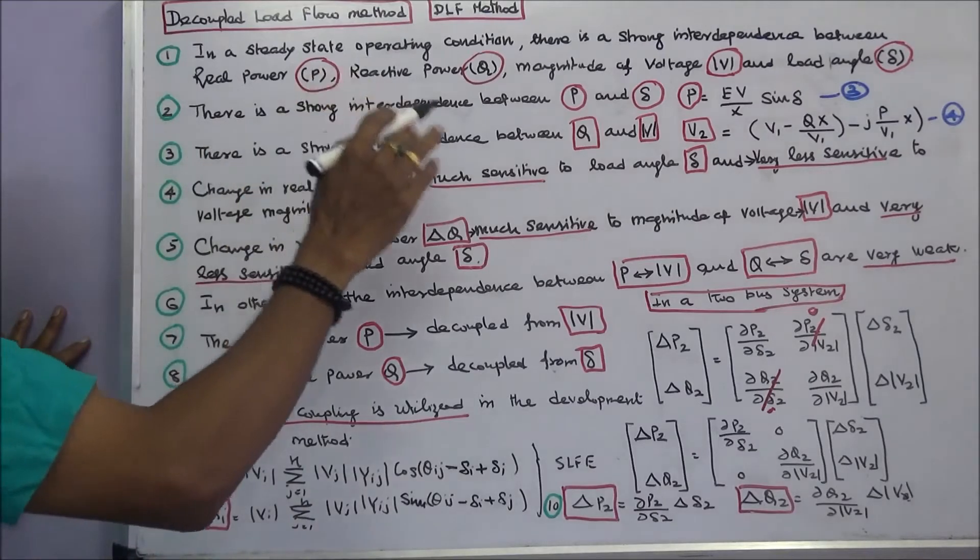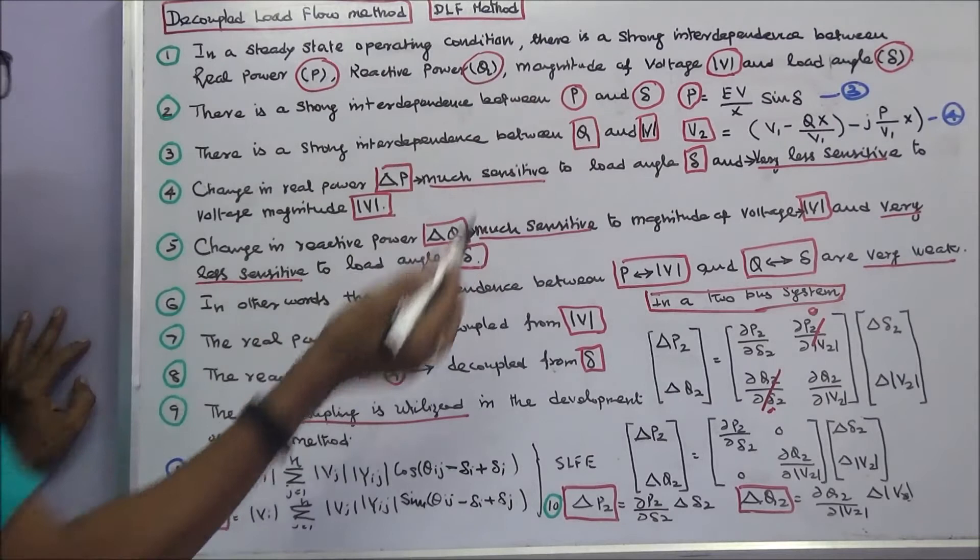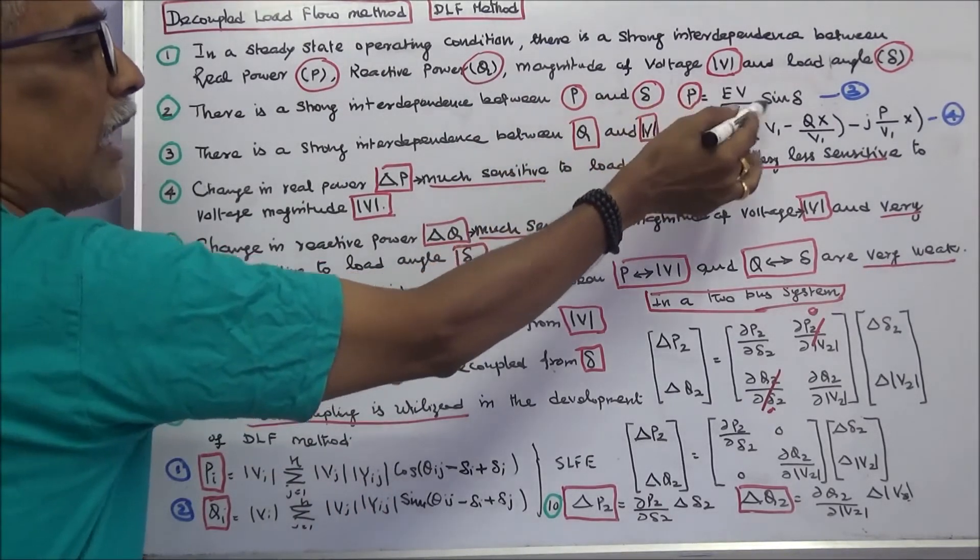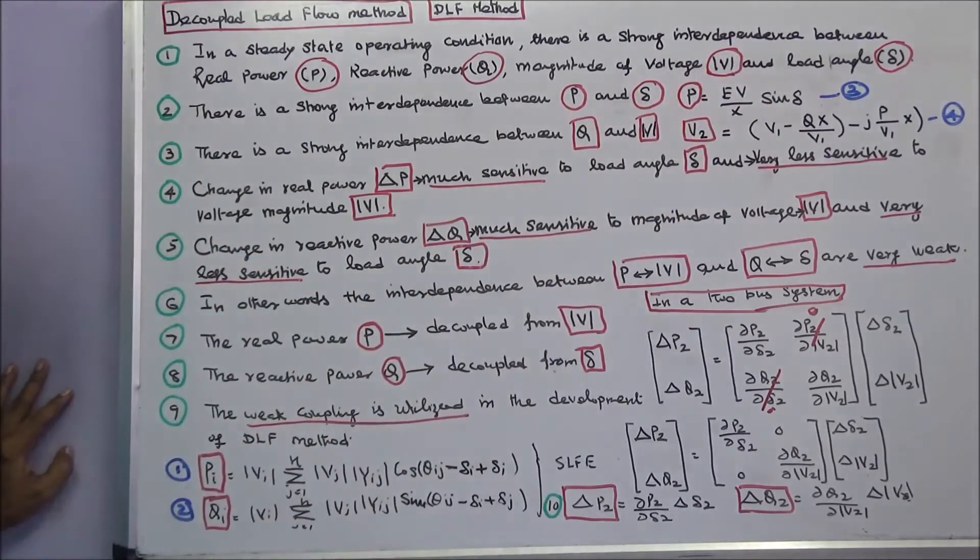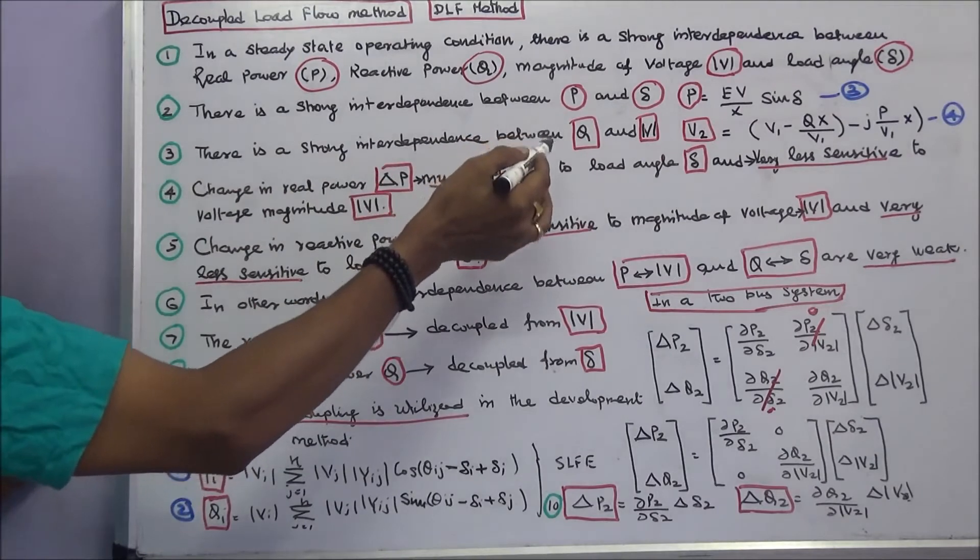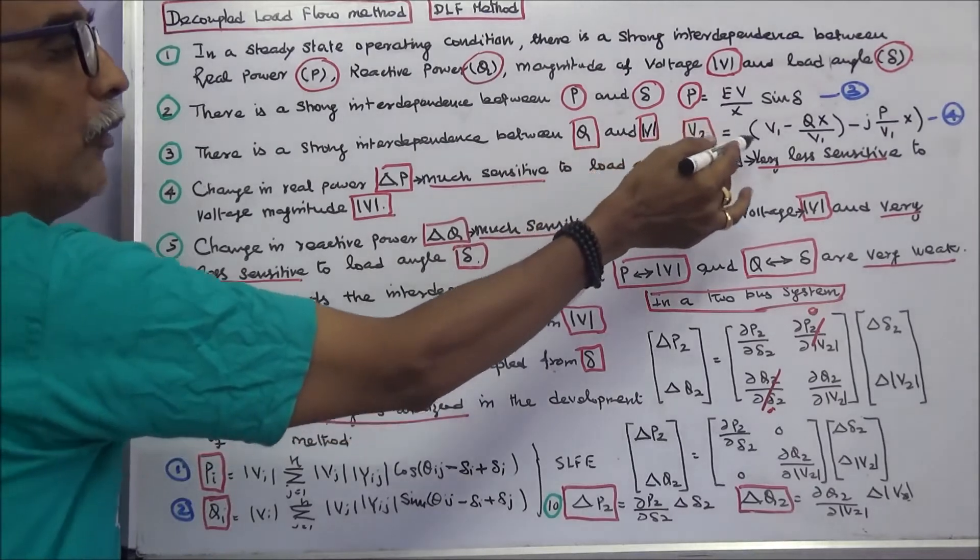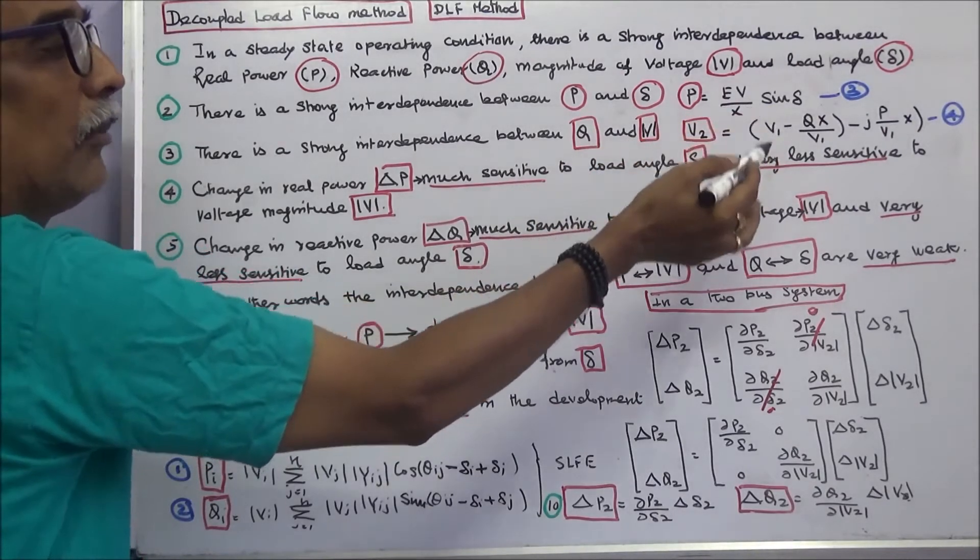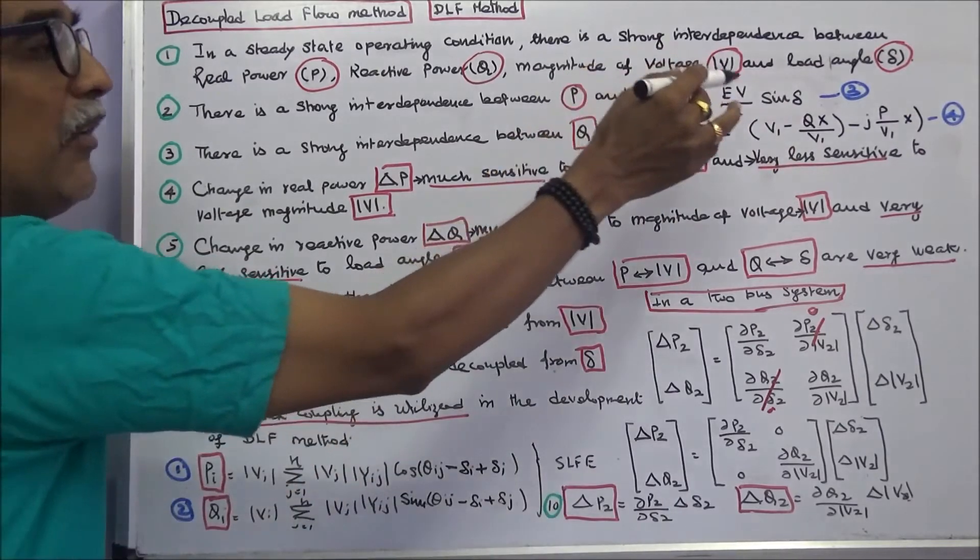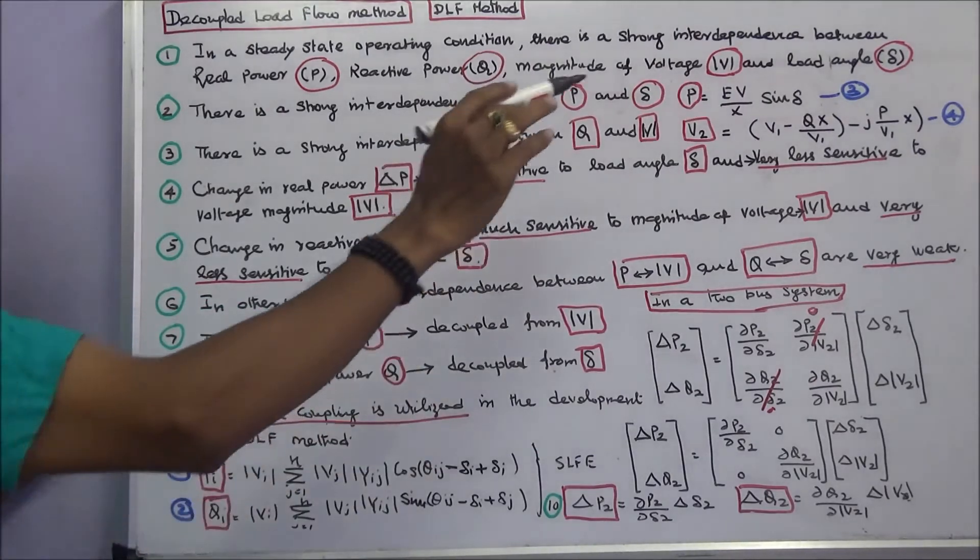There is a strong interdependence between real power P and load angle delta. We know that real power P equals E into V by X into sine delta, equation 3. There is a strong interdependence between reactive power Q and modulus of V. V2 equals V1 minus Q into X by V1 minus J into P by V1 into DX, equation 4. I derived equations 3 and 4 in my previous lectures. Please refer to my previous lectures.